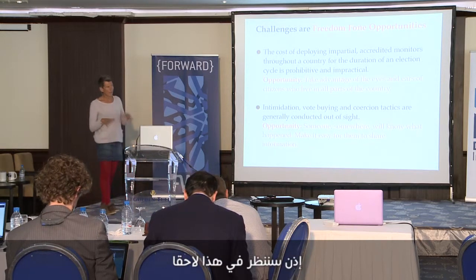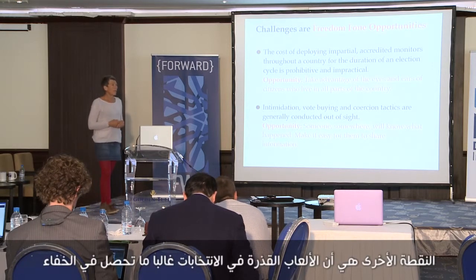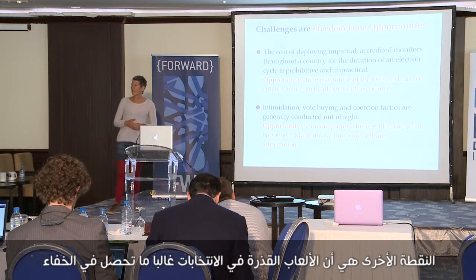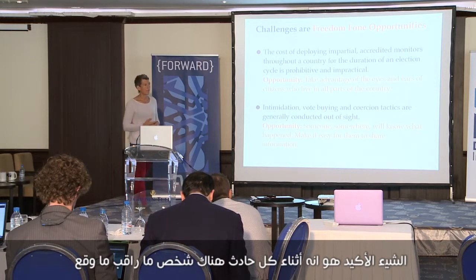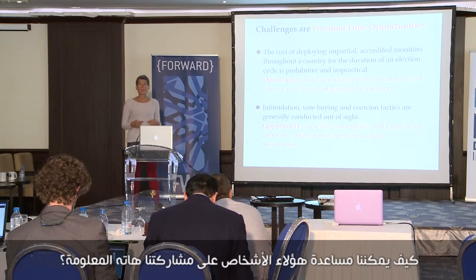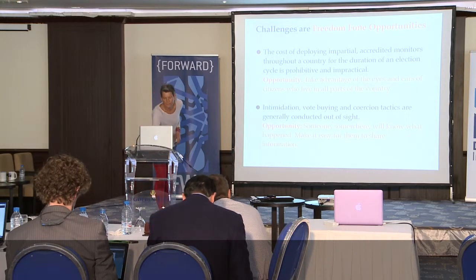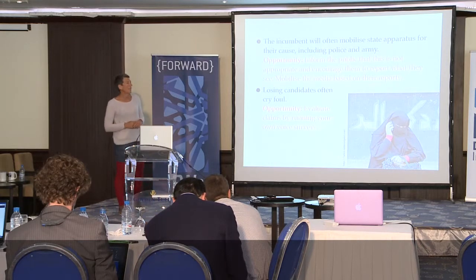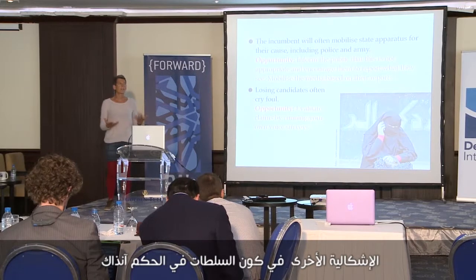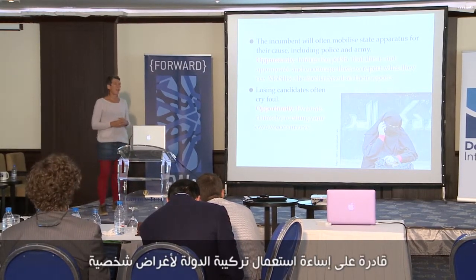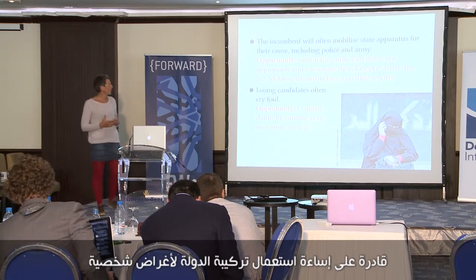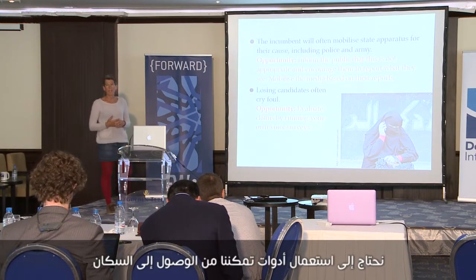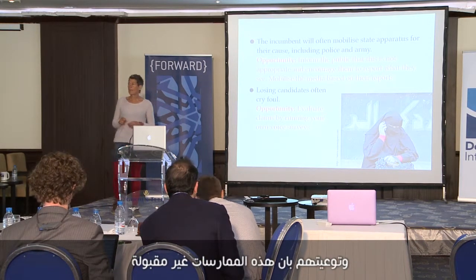The other thing is that a lot of the dirty business that surrounds elections happens out of sight. But one thing we know for sure is that in almost all incidences, somebody somewhere will have seen or observed that incident. How do we make it easy for those people to share information with us? The other thing that's really problematic is that whoever is the incumbent — the people in government at the time of an election — often has the ability to abuse the state structure for their own purposes. We need to use tools that can reach out to populations and make them very clear about the fact that that's not okay.